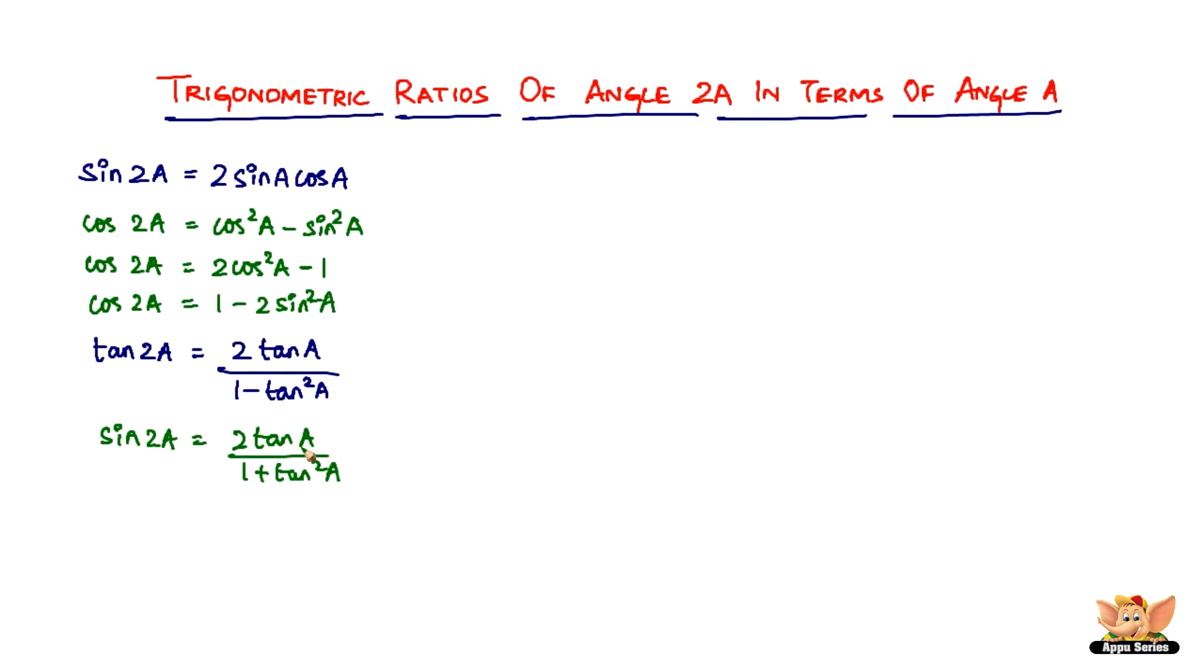And then you've got cos 2a. One more for cos 2a. If you want to write it in terms of tan, this is 1 minus tan²a divided by 1 plus tan²a. So these are the trigonometric ratios of angle 2a in terms of angle a.